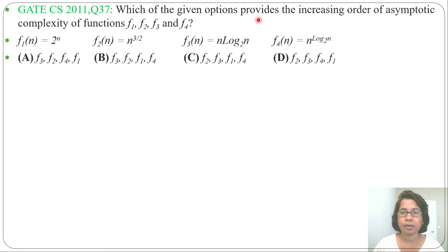Which of the given options provide the increasing order of asymptotic complexity of functions f1, f2, f3, and f4? f1 of n equals 2 power n, f2 of n equals n power 3 by 2, f3 of n equals n log n base 2, f4 of n equals n power log n base 2, and 4 options are given.